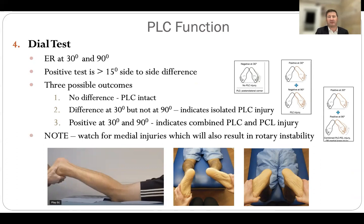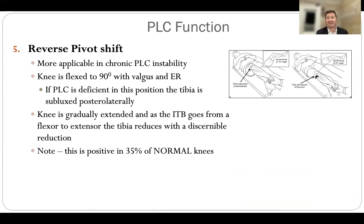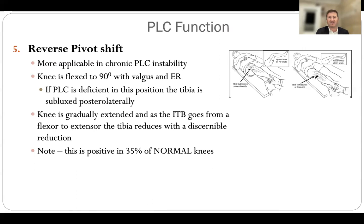There are three possible dial test outcomes: no difference suggests the posterolateral corner is intact; difference at 30 degrees but not 90 indicates an isolated posterolateral corner injury; positive at both 30 and 90 indicates combined posterolateral corner and PCL injury. Note that significant medial injuries can give a false positive. The reverse pivot shift is more applicable in the chronic case — the knee is flexed to 90 degrees with external rotation and valgus applied; if the PLC is deficient the tibia will be subluxed posterolaterally, then as the knee extends the IT band reduces it. However, up to 35% of normal knees will be positive, so compare to the other side.